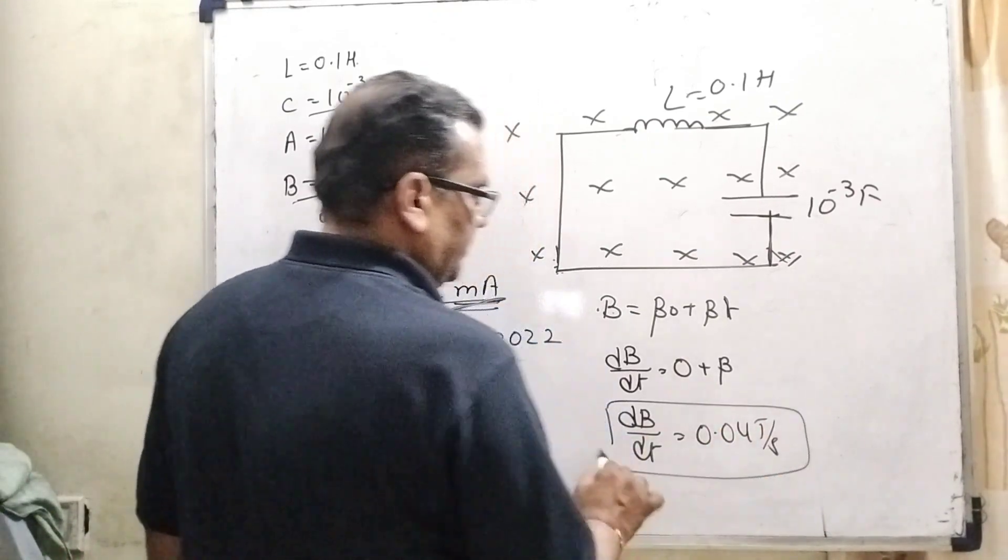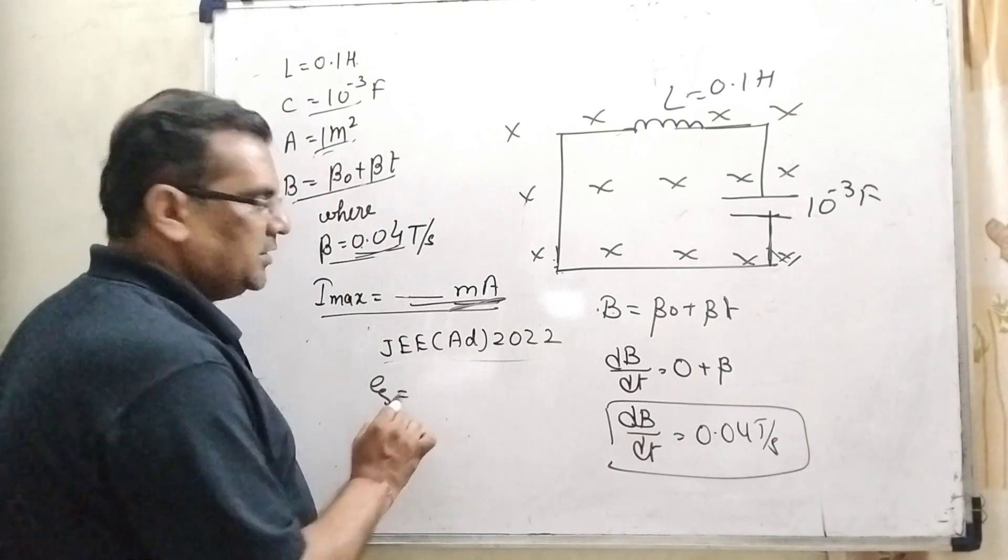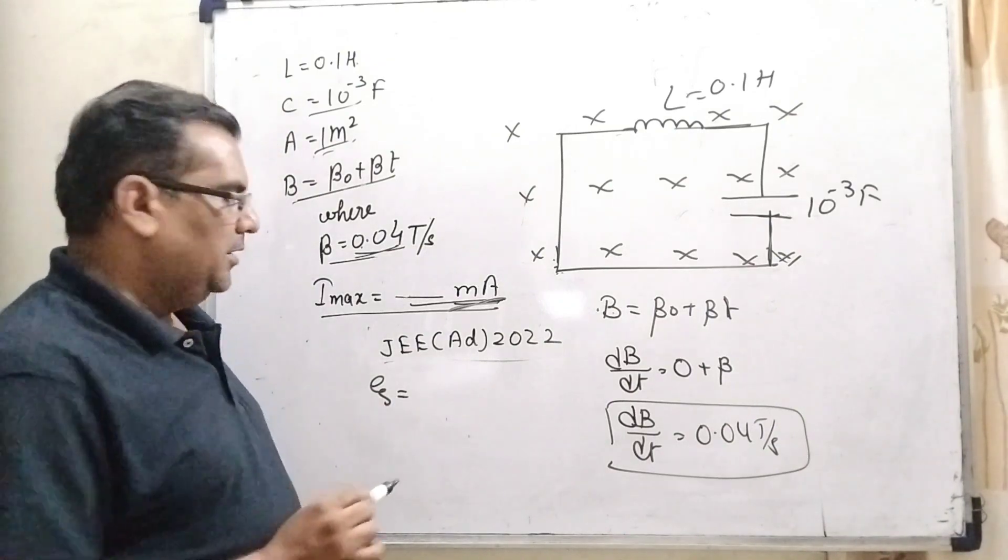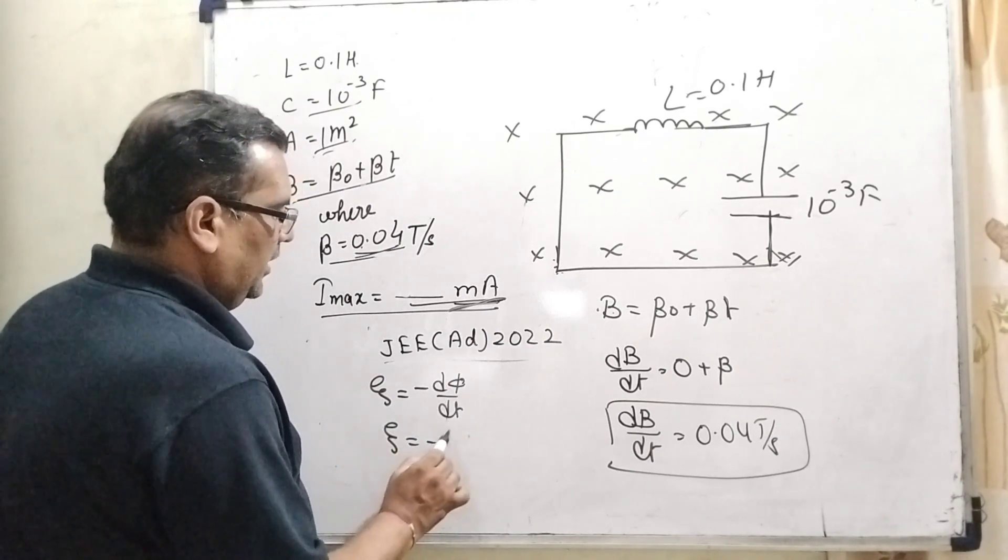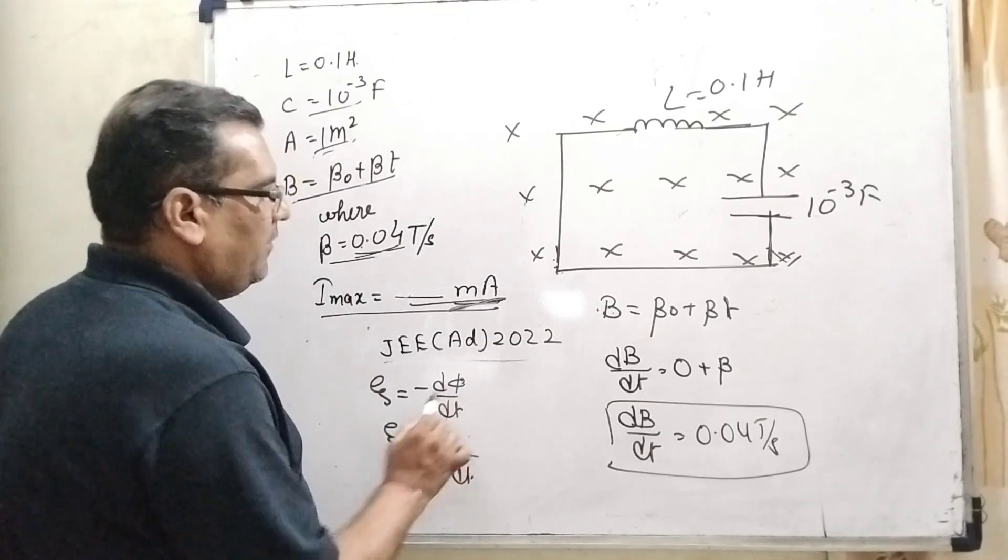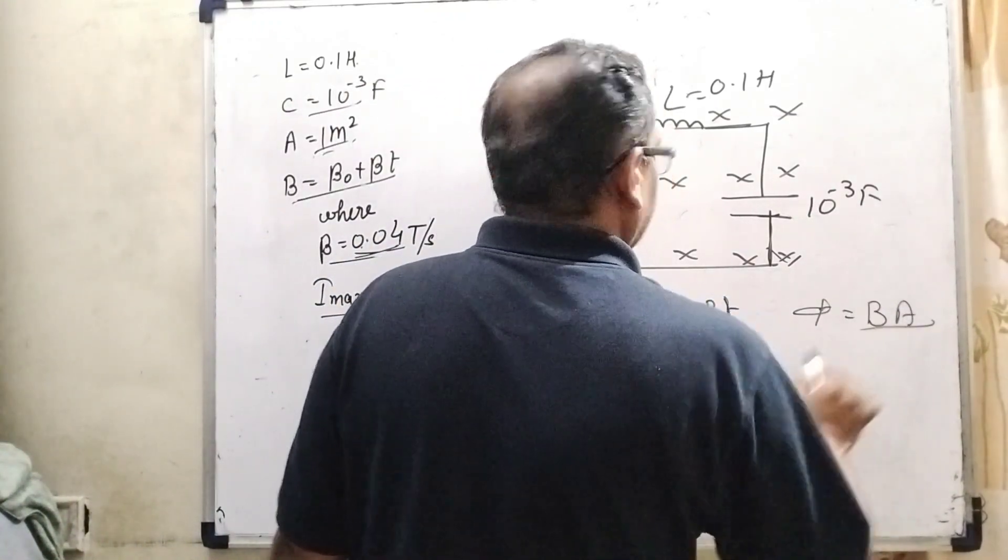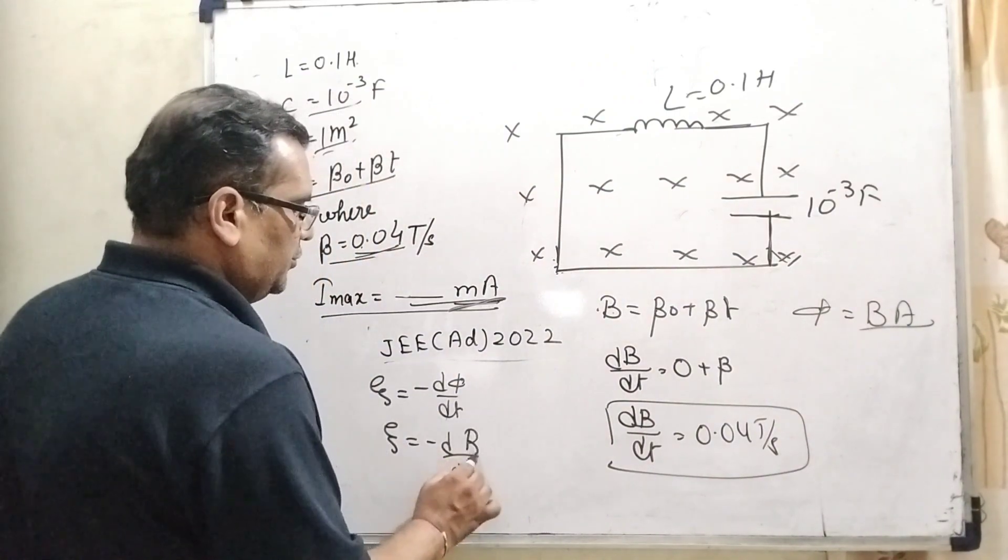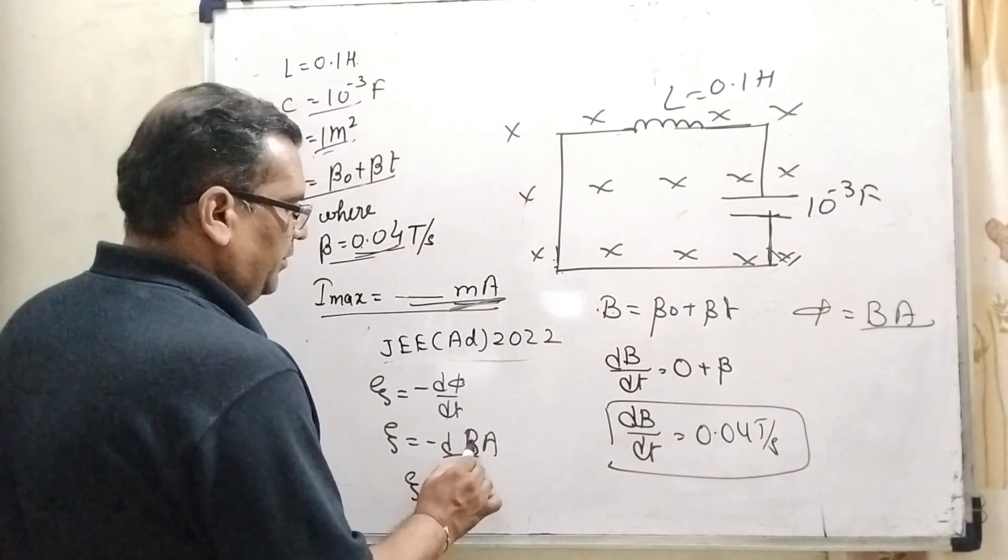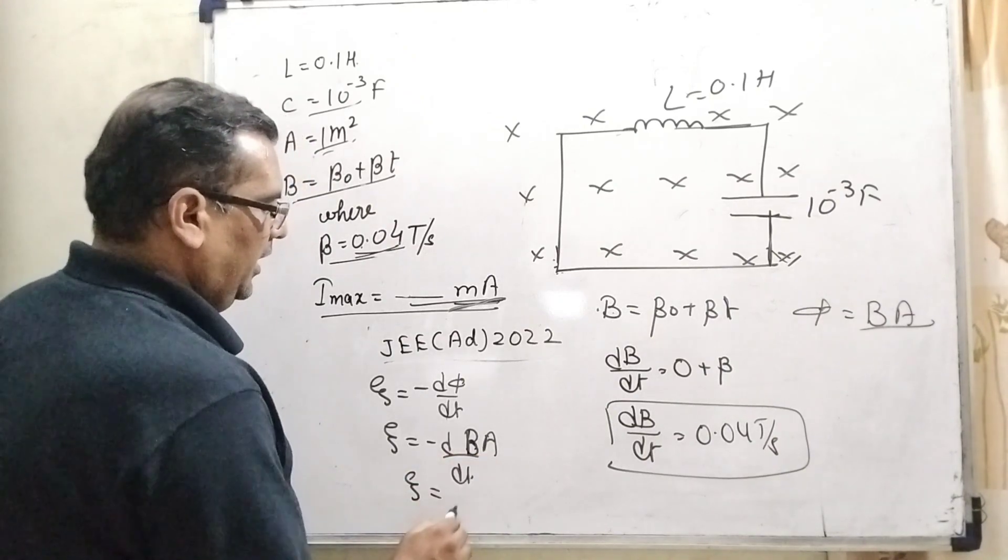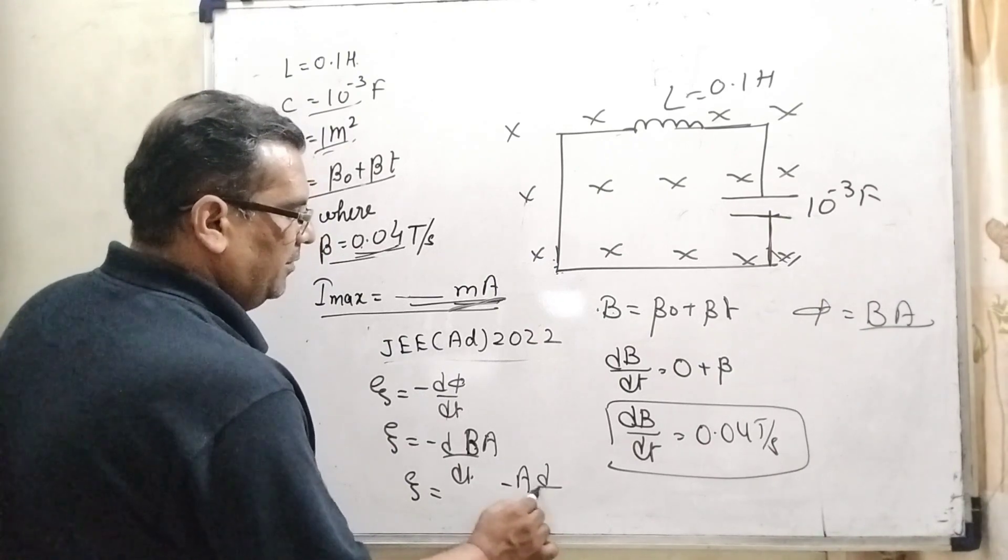That is dB by dt. Now we know that very well induced EMF, what is the formula of induced EMF? Minus d phi by dt. Then what is phi? Phi is flux, and formula of flux is magnetic field into area. So here B into A. Here B is variable and A is area is constant, so therefore it can be written as minus A dB by dt.